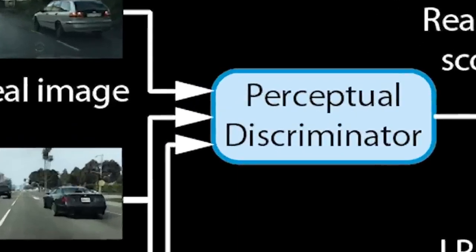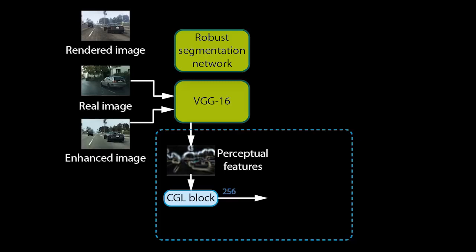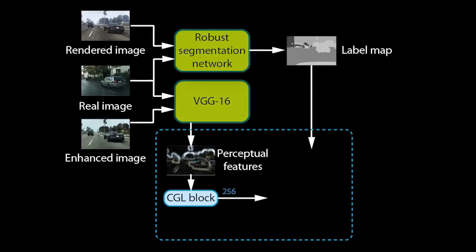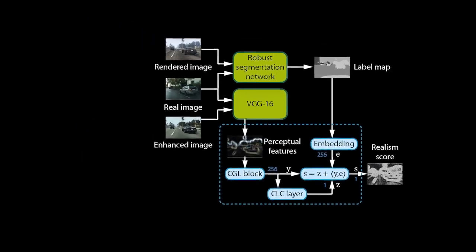Let us now look at how the perceptual discriminator works. The discriminator contains a robust semantic segmentation network and a network for extracting perceptual features — in this case, a VGG-16. We extract features from the VGG at multiple levels and pass them through a convolutional network. This differs from prior work that trains discriminators directly on images; training on VGG features allows our network to quickly learn a model of realism at multiple perceptual levels. We further pass the unmodified rendered image, as well as real images, through the segmentation network to obtain a label map for each. The label map is used to specialize the discriminator on individual object classes. Since we use a pre-trained, robust segmentation network, the object classes are consistent for rendered and real images. For more details, we refer to our paper.